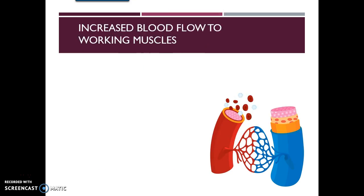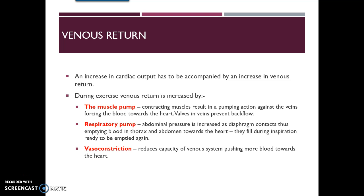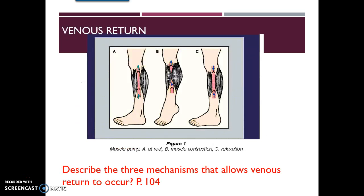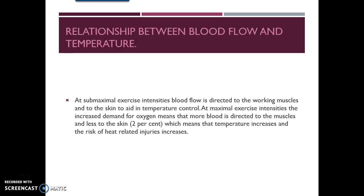Increased blood flow to working muscles is a direct result of vasoconstriction and dilation. We also see an increase in venous return — more blood returning to the heart due to increased cardiac output. This occurs through the muscle pump (muscles moving and acting as a pump), a respiratory pump (abdominal pressure changes as the diaphragm expands and contracts), and vasoconstriction. Blood volume generally decreases during exercise.